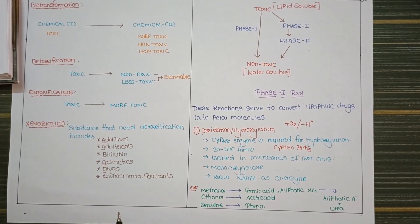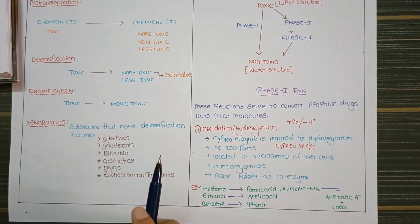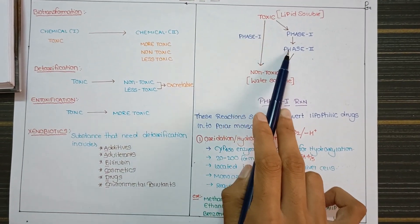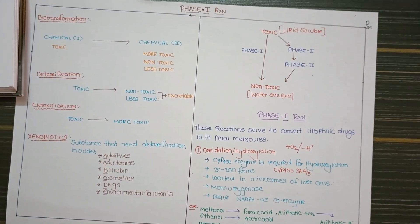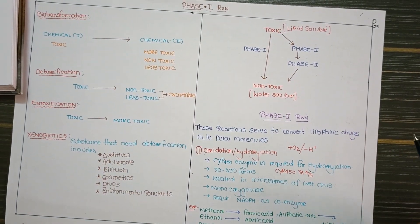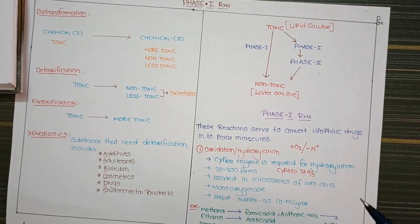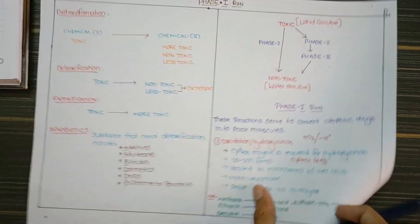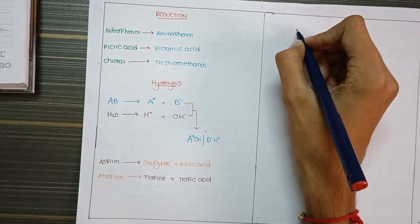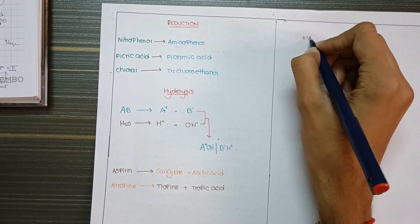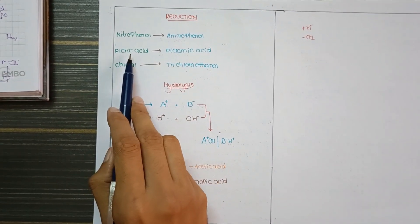The main motive is that lipophilic molecules — toxic molecules in your body — are converted through phase 1 and phase 2 reactions to forms your body can excrete via biotransformation. In phase 1: oxidation, hydrolysis, reduction, cyclization and de-cyclization. Phase 2 is a conjugation reaction: glucuronide conjugation, sulfate conjugation, amino acid conjugation. Reduction is the addition of hydrogen and removal of oxygen — opposite of oxidation. Examples: nitrophenol to aminophenol, picric acid to picramic acid, chloral to trichloroethanol.